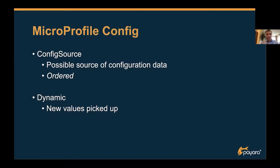The order is very important, especially if you want to override your default values with something specific in a test environment. Configuration is also dynamic, so you can make those sources checked over and over again every time you request a configuration value. You can also provide some kind of cache. With Payara, for instance, you have the option to define with certain configuration parameters the time that a value is cached and not resolved again from all the configuration sources.